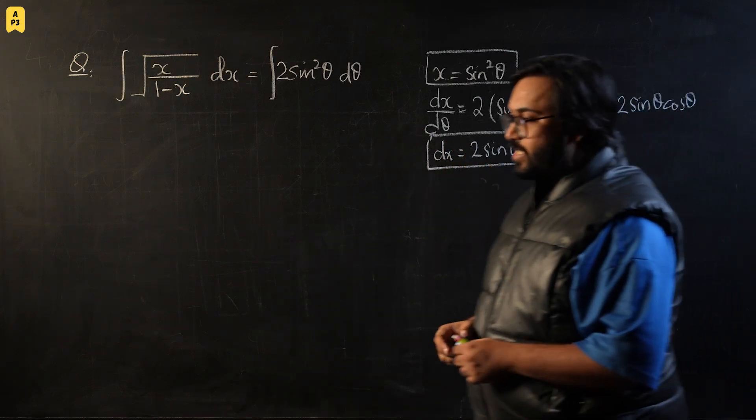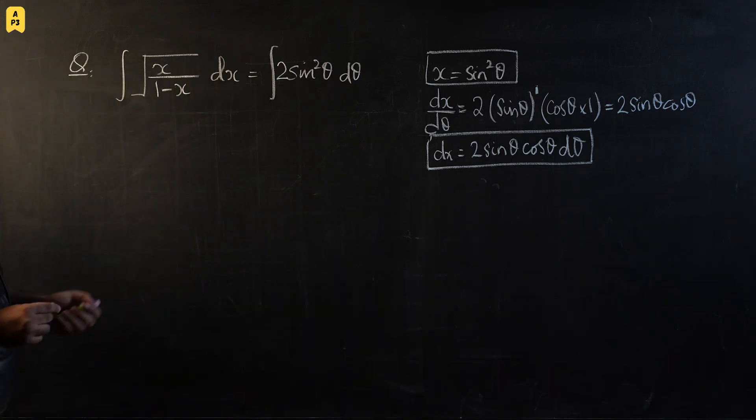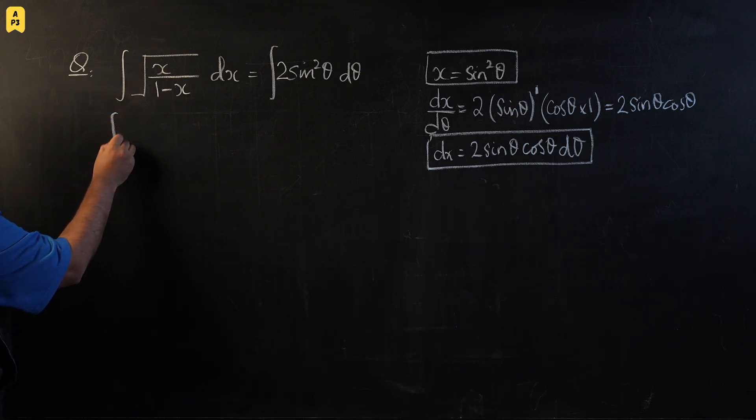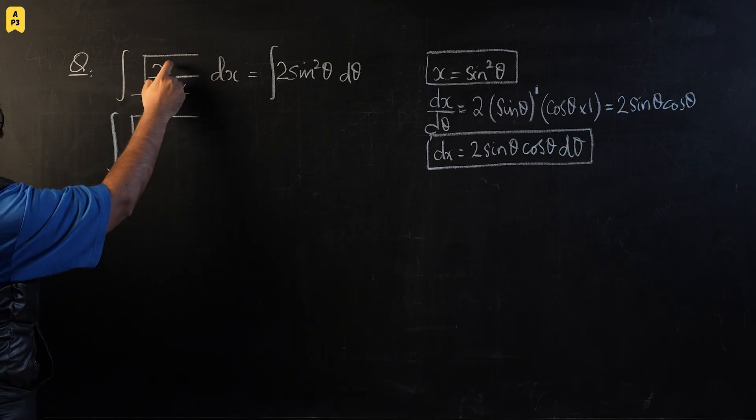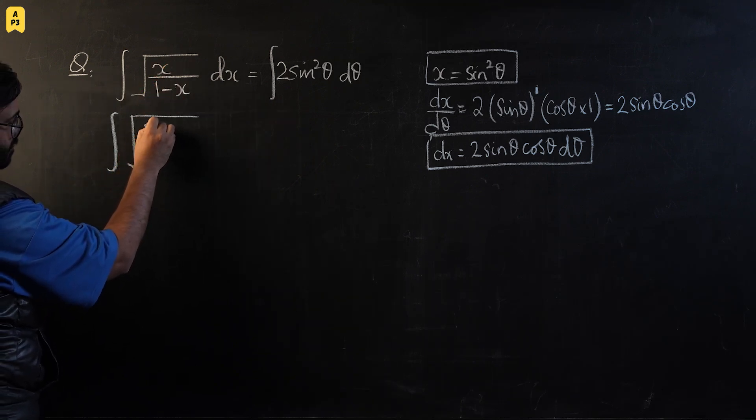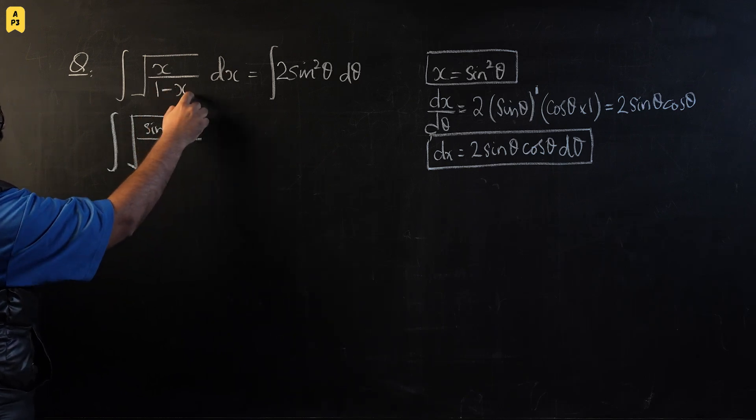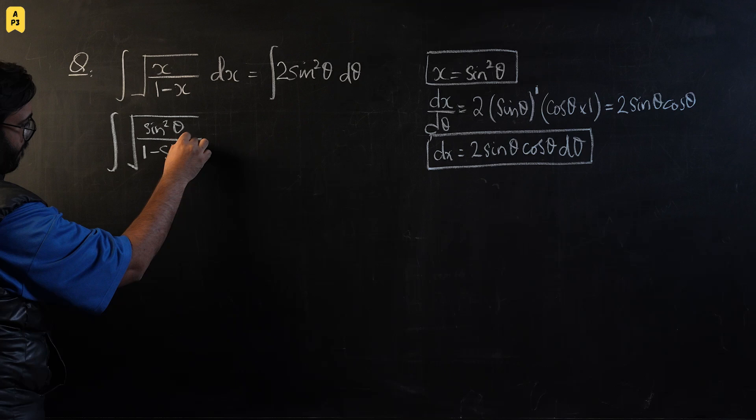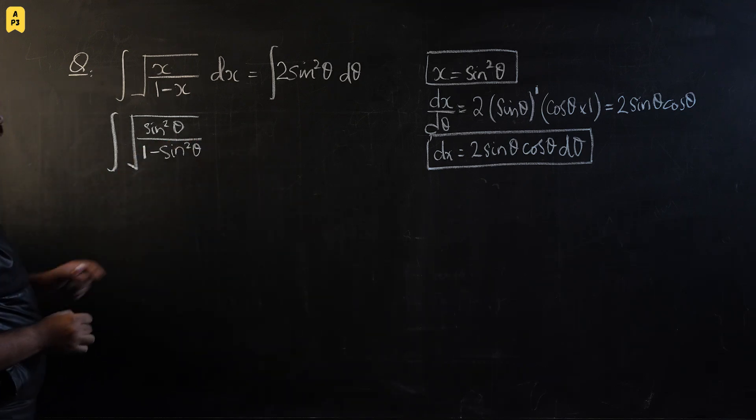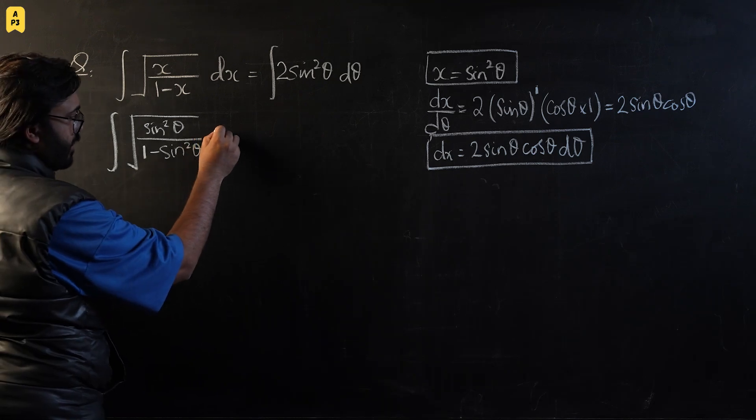Let's move on to this part. Now we start substituting sin²θ in the place of x everywhere. So this will become sin²θ over 1 - sin²θ. This dx will now become 2sinθcosθ dθ.